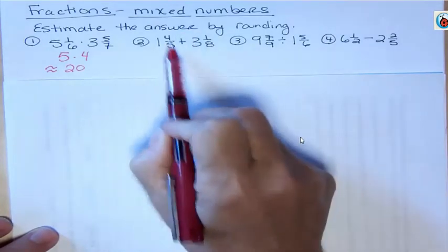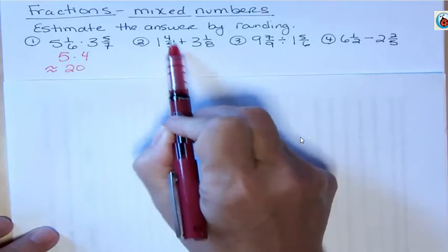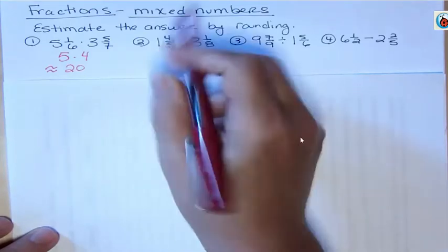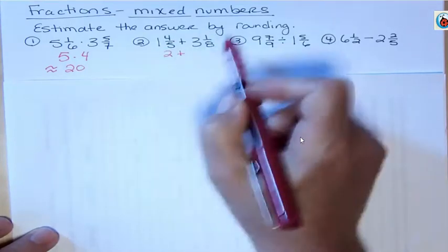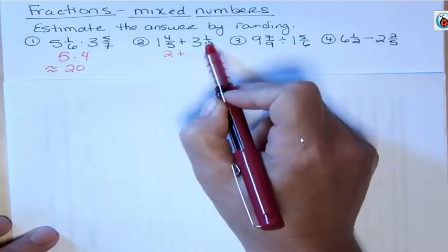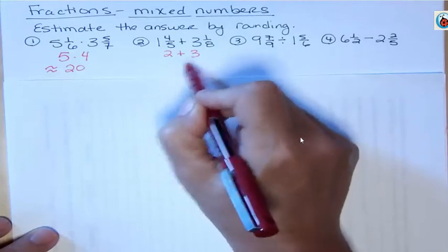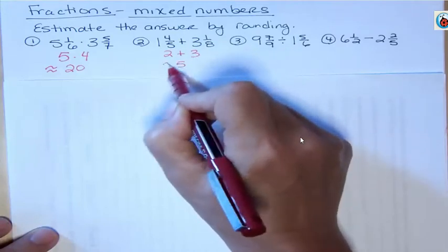Okay, so four fifths. Well, half of five is two and a half. And we have more than half. So this is bigger than half. So we're going to round that up to two. Half of eight is four. One eighth is less than four, less than half. And so we're going to go down to three. And two plus three is about five. That's my approximation.